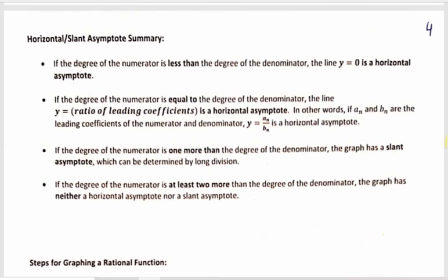Summary of rules: if the degree of the numerator is smaller than the degree of the denominator, the horizontal asymptote is y equals zero. If degrees are equal, the horizontal asymptote is the ratio of the leading coefficients. If the degree of the numerator is one larger, you get a slant asymptote found by long division. If the degree of the numerator is two or more larger, you get neither — those graphs get very wild and are tough to draw by hand.